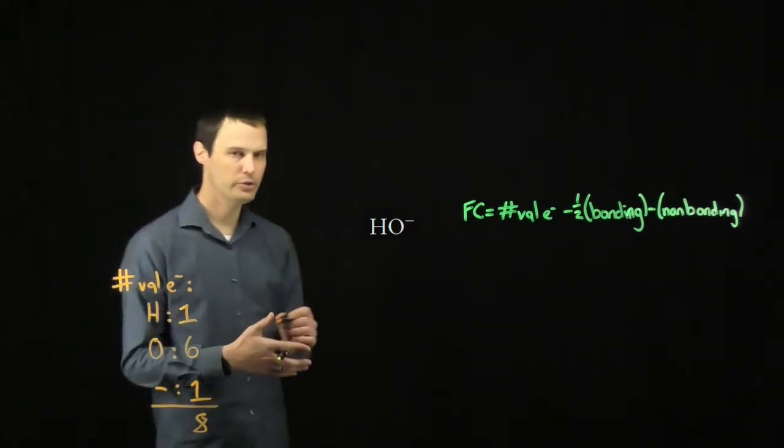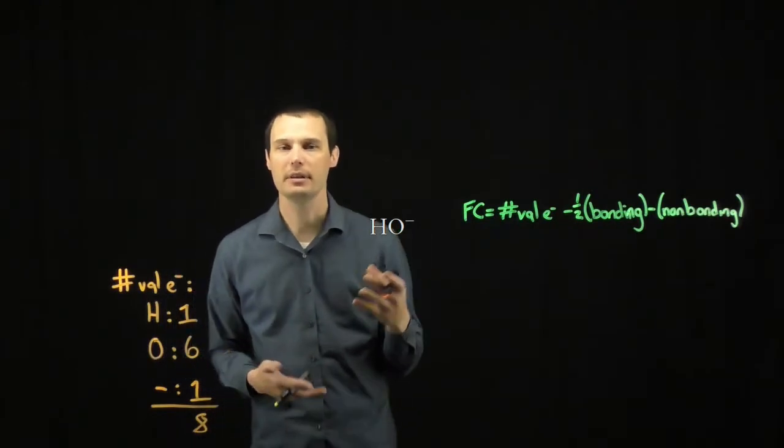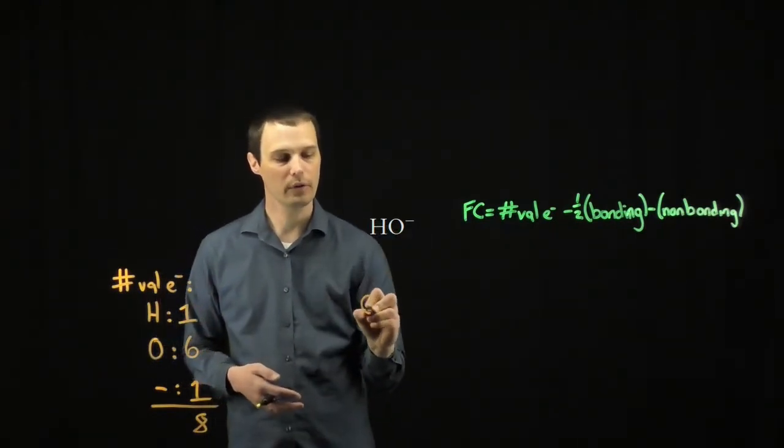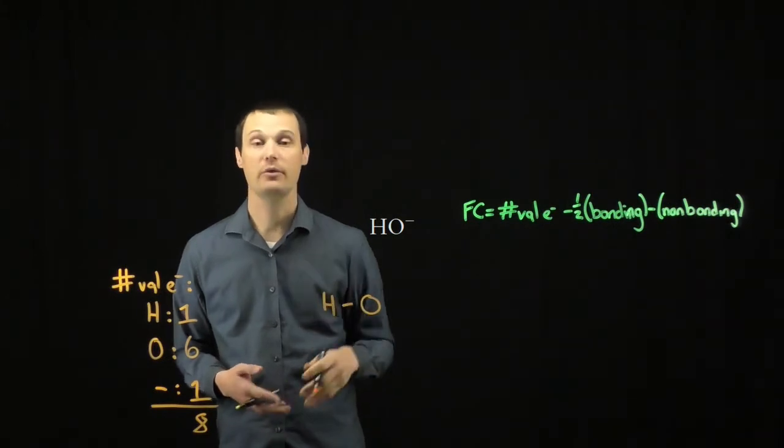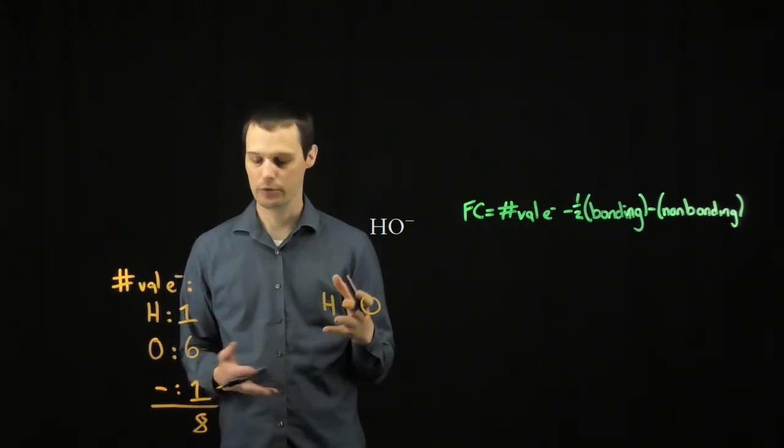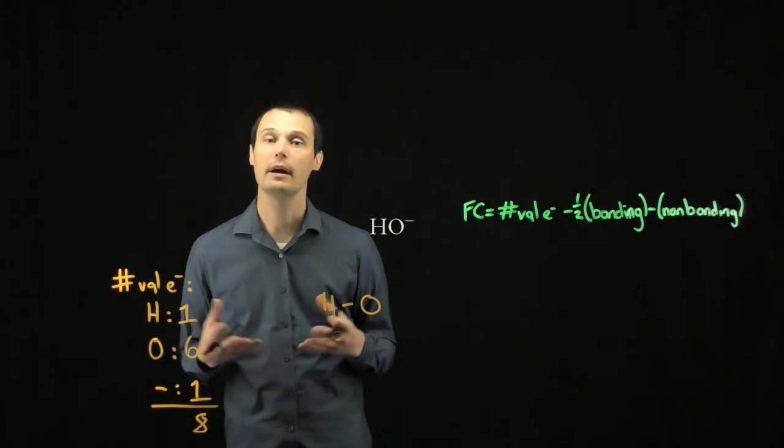To do so, we will start with the central atom. Hydrogen can never be a central atom. It only makes one bond. So we'll start with the oxygen. We'll draw a bond to the hydrogen. This bond represents two electrons. I've used two of the eight total electrons so far. I need six more.